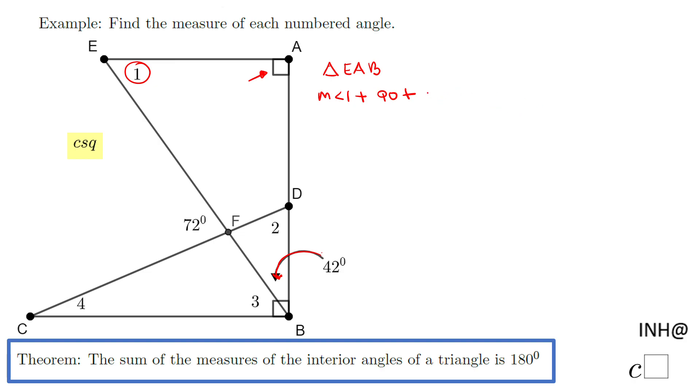Plus we have another angle which is angle ABE, that is 42 degrees, equals 180 degrees. Now we can combine the 90 and 42, that will be 132. The last step to find angle 1 is to subtract 132 from both sides, and we have the measure of angle 1 will be 48 degrees.